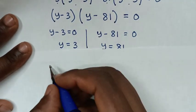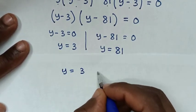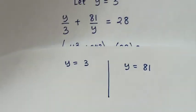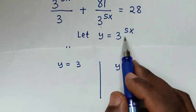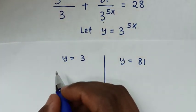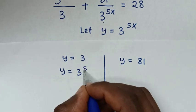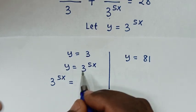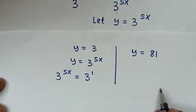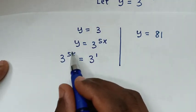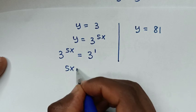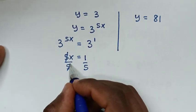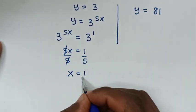From y equals 3, recalling that y equals 3 power 5x, we get 3 power 5x equals 3, which is the same as 3 power 1. Since the bases are the same, we compare powers: 5x equals 1. Dividing both sides by 5, x equals 1 over 5.